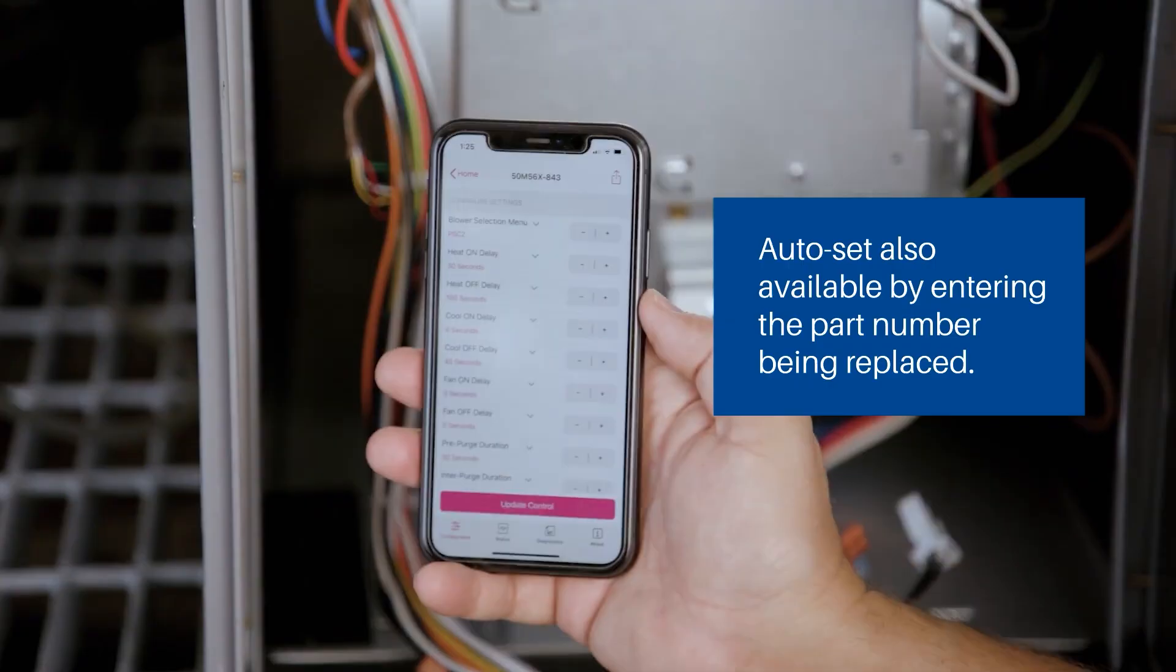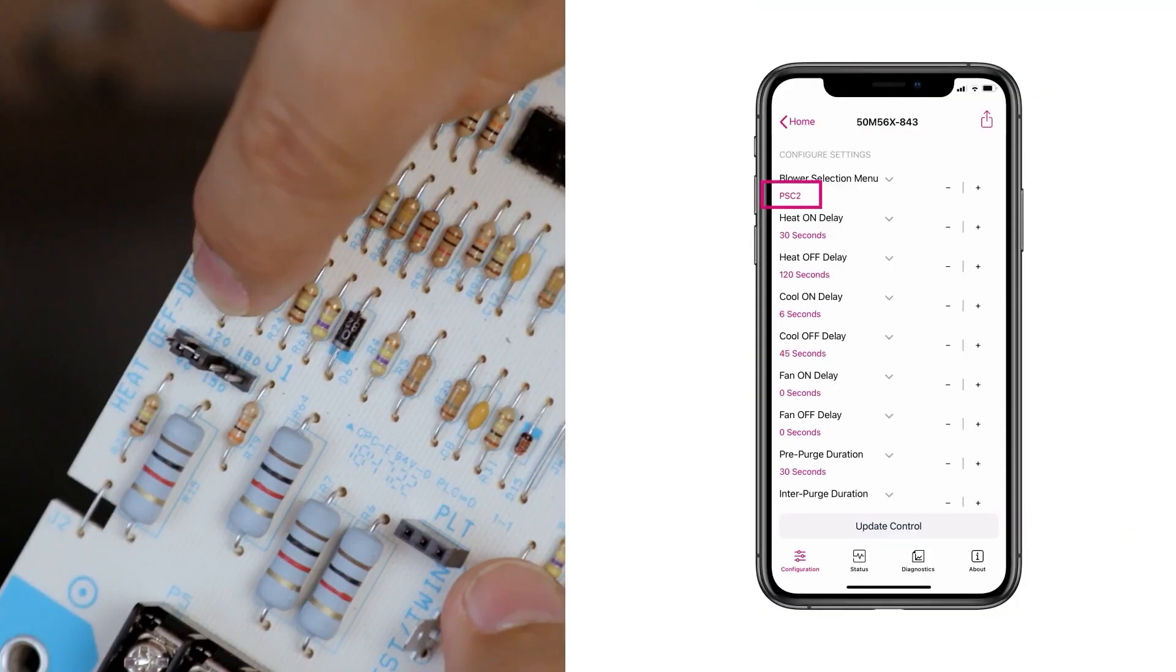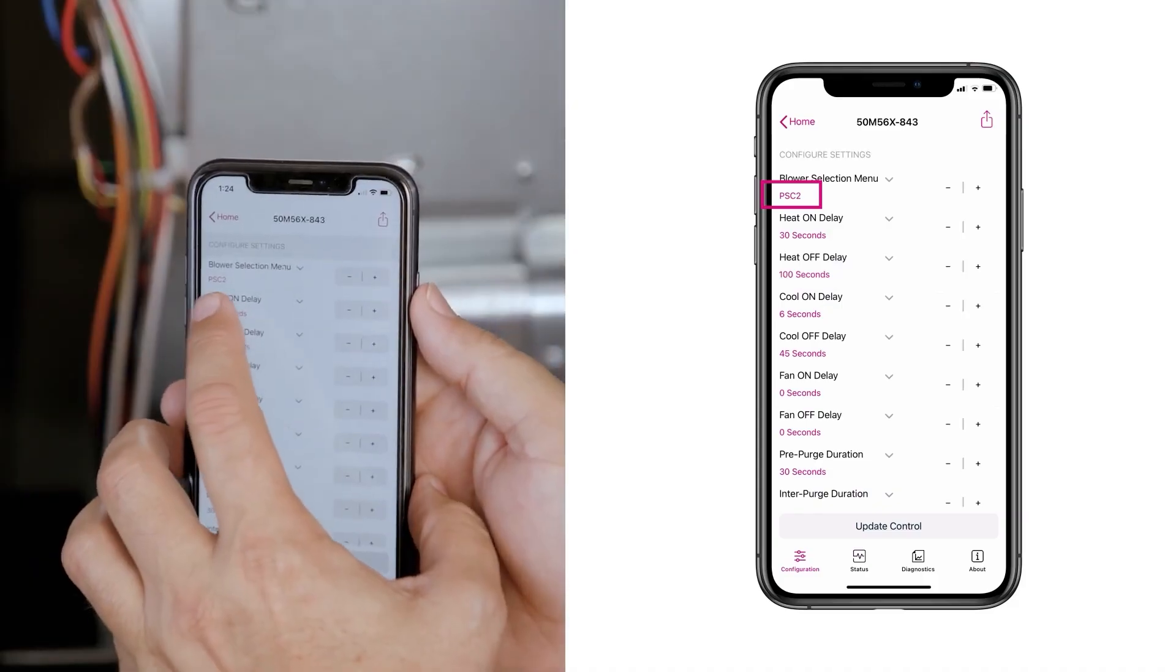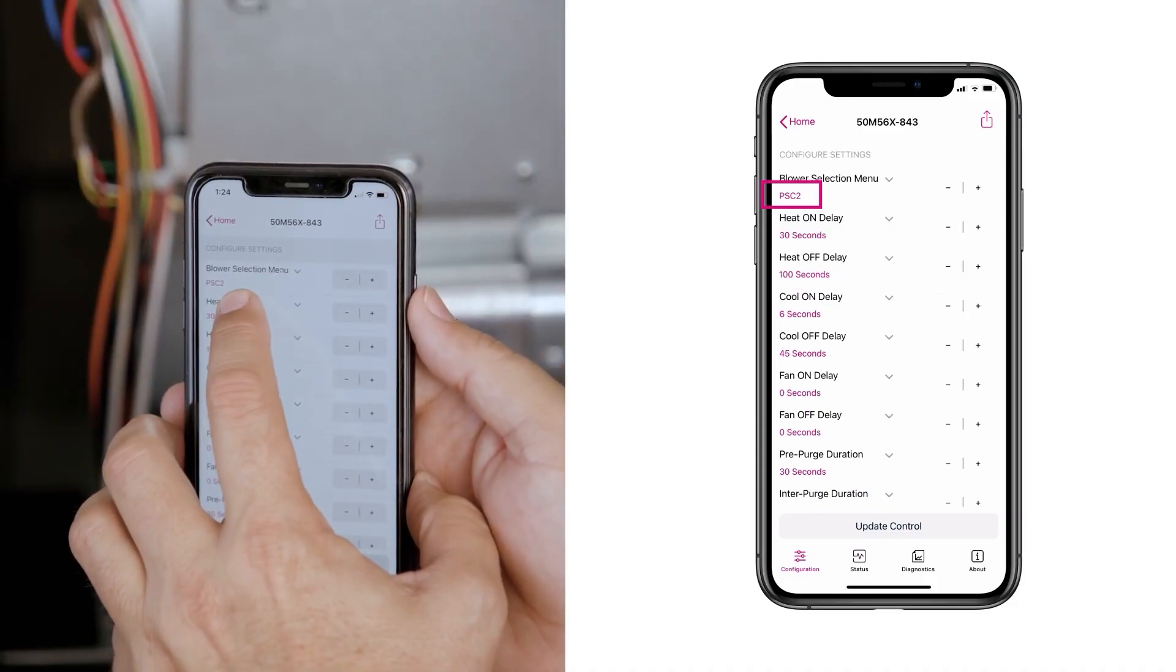With the Auto Set feature, you can enter the part number of the OEM or competitor board that you're replacing, and it will automatically configure to match the board. Additionally, any settings can be adjusted as needed.